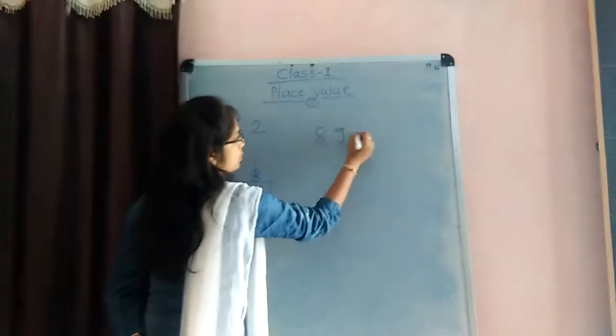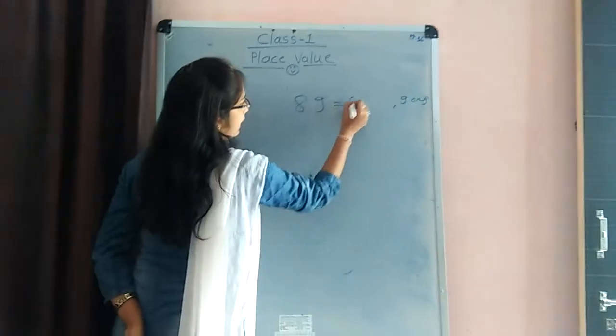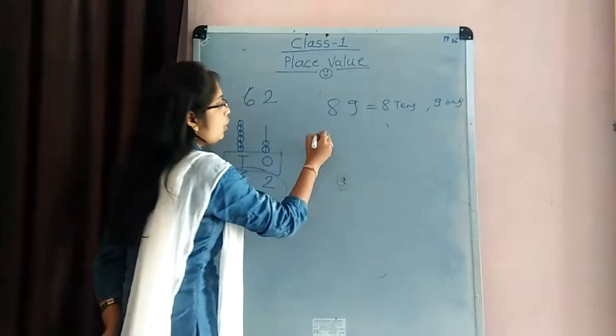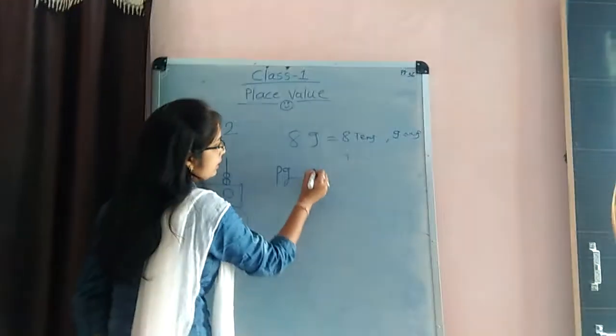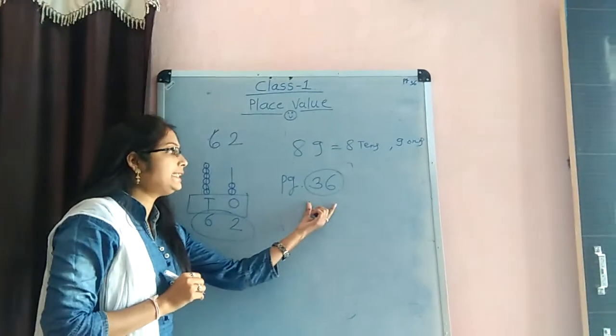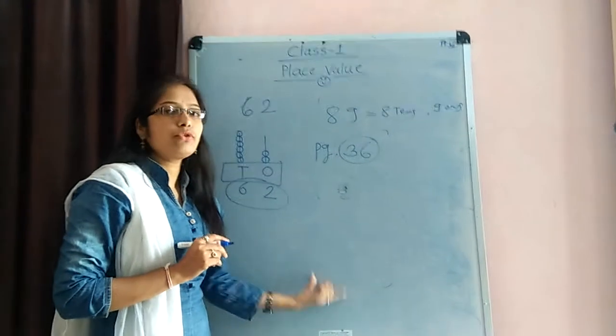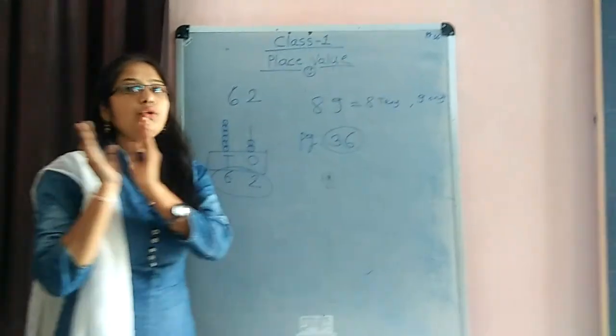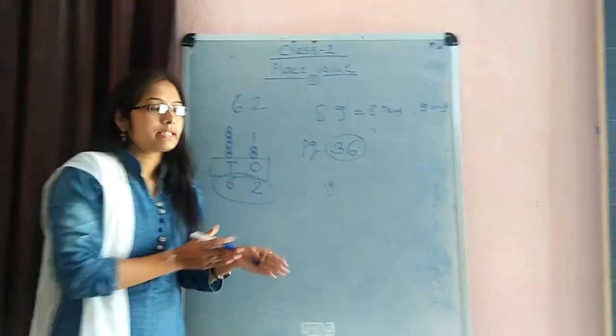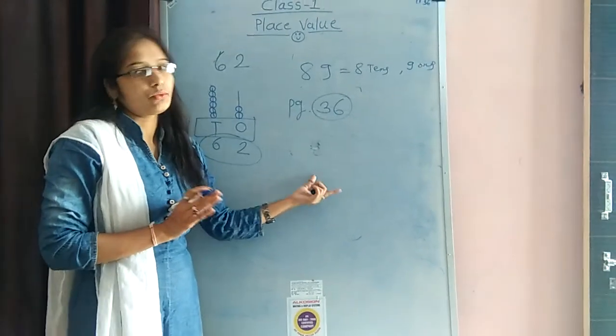89. 89. So, 9 is in 1s place. And 8 is in 10s place. And 8 is in 10s place. Okay. So, ye ho gaye, 62. Bye.